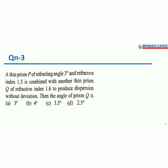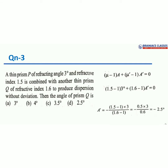In the concept of prisms, two conditions exist: dispersion without deviation and deviation without dispersion. Here the question focuses on dispersion without deviation, meaning the deviation produced by prism P plus the deviation produced by prism Q equals zero. The deviation produced by a single prism is δ = (μ − 1) × A. For two prisms: (μ − 1)A + (μ' − 1)A' = 0. Substituting μ = 1.5, μ' = 1.6, and A = 3°, we get A' = −2.5 degrees.